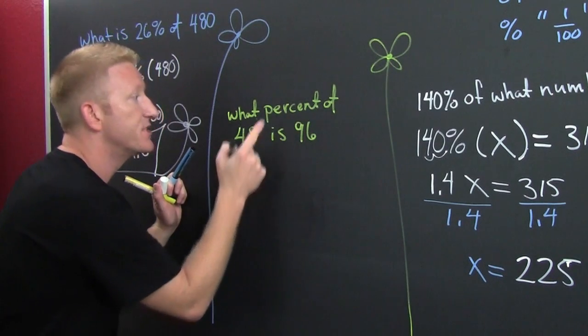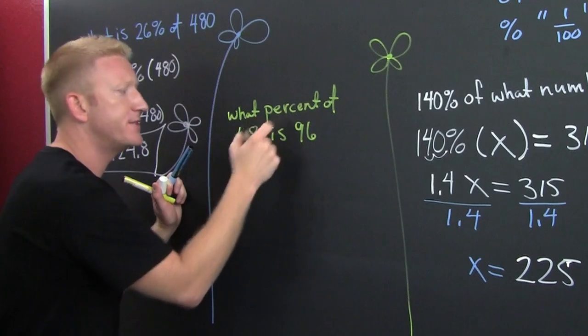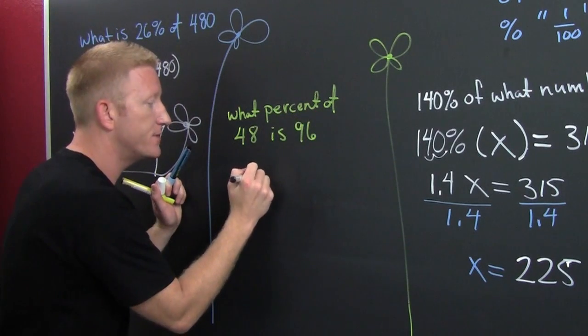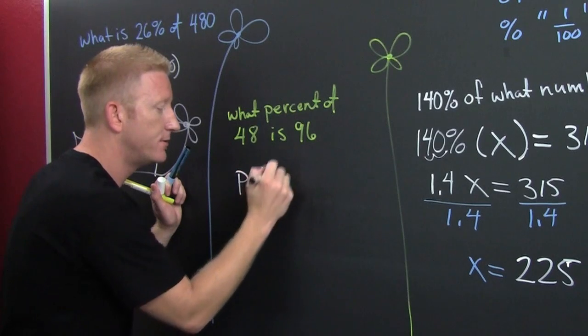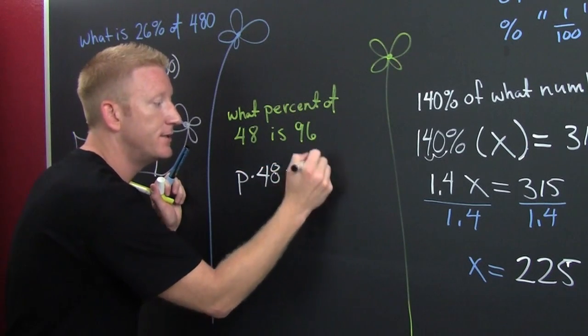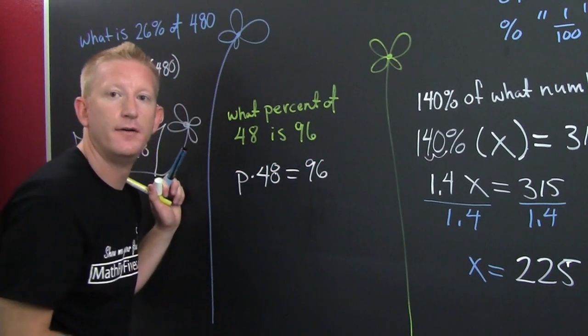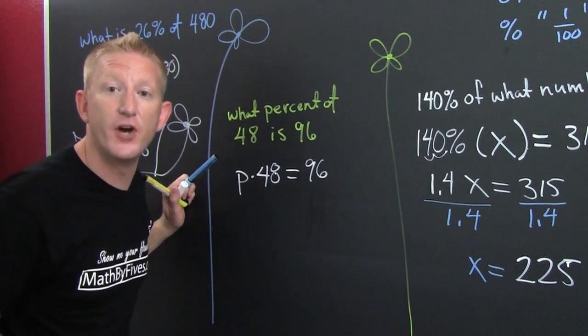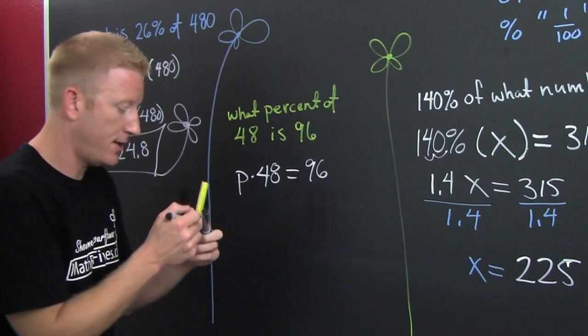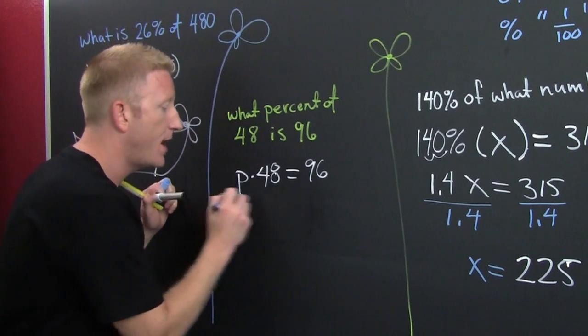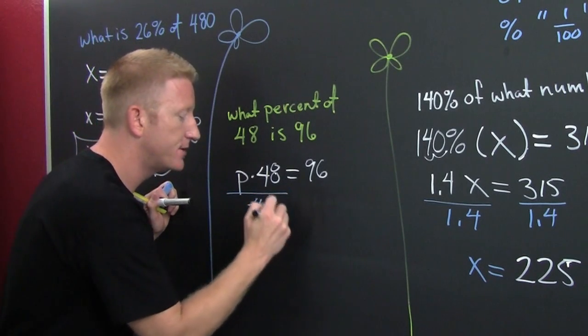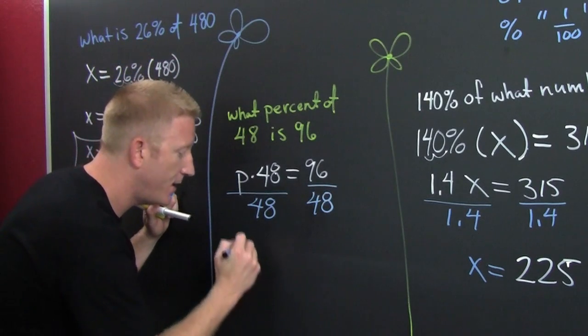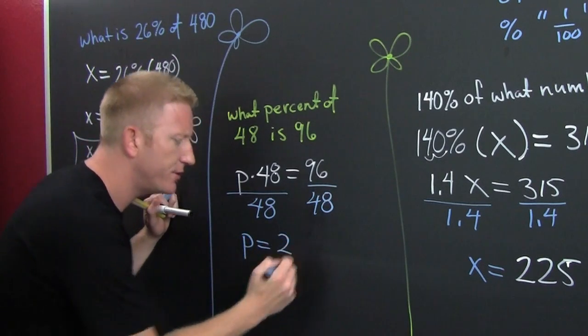Let's go. So what percent? Here I'm going to use P. Of is times 48 is 96. Finish him. I'm really worried about my other camera. It's over there freaking out. So then finish him. I divide this side by 48. I divide this side by 48. Great. And then my P turns out to be 2.